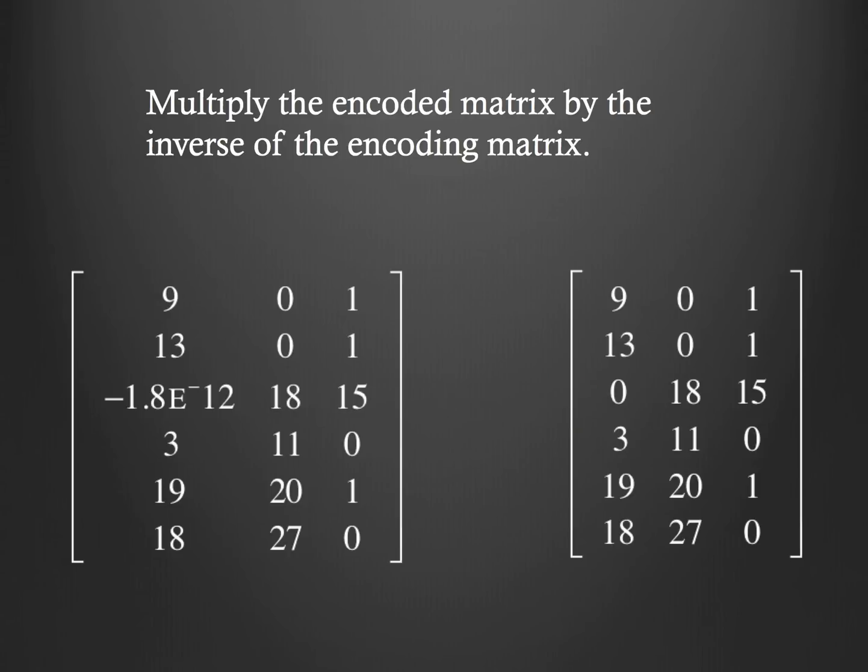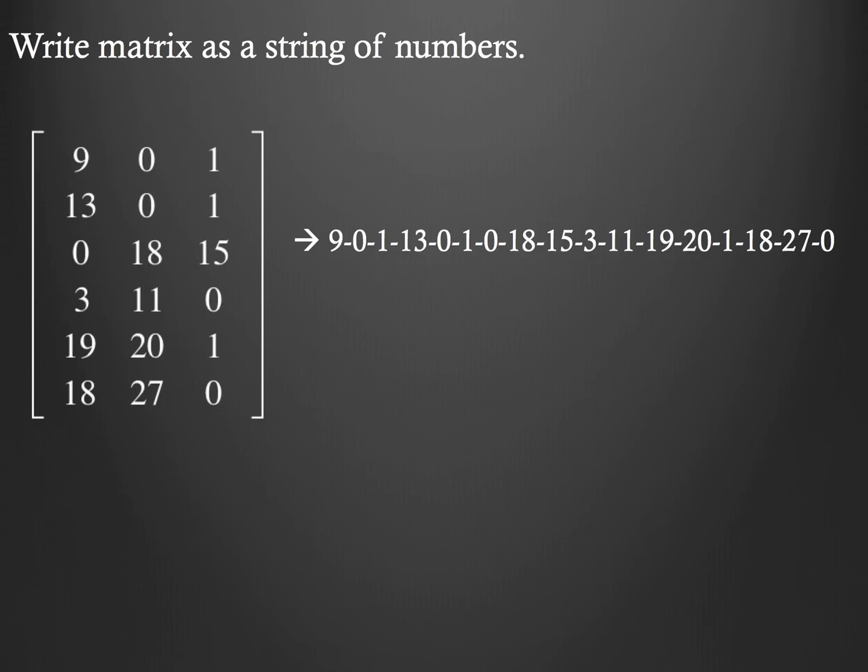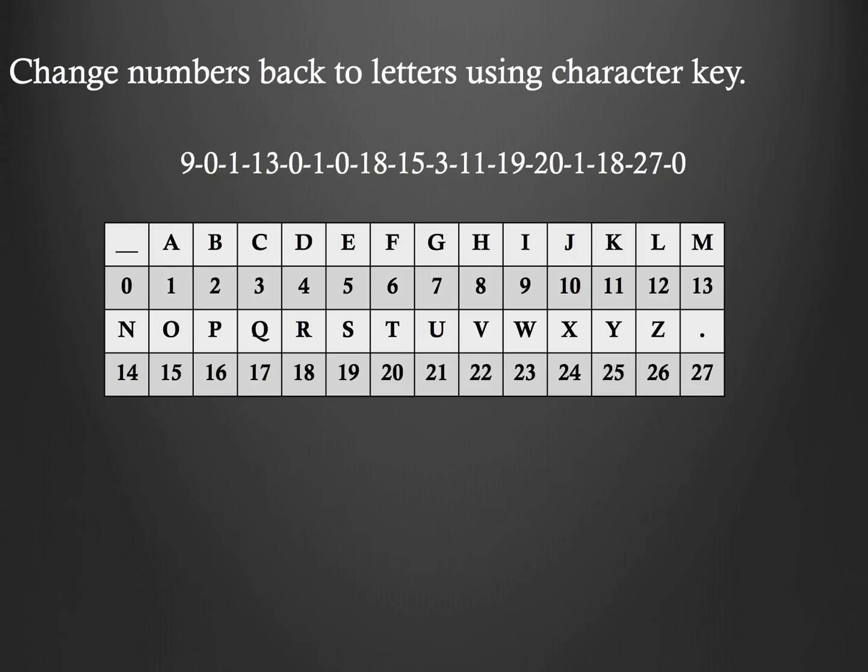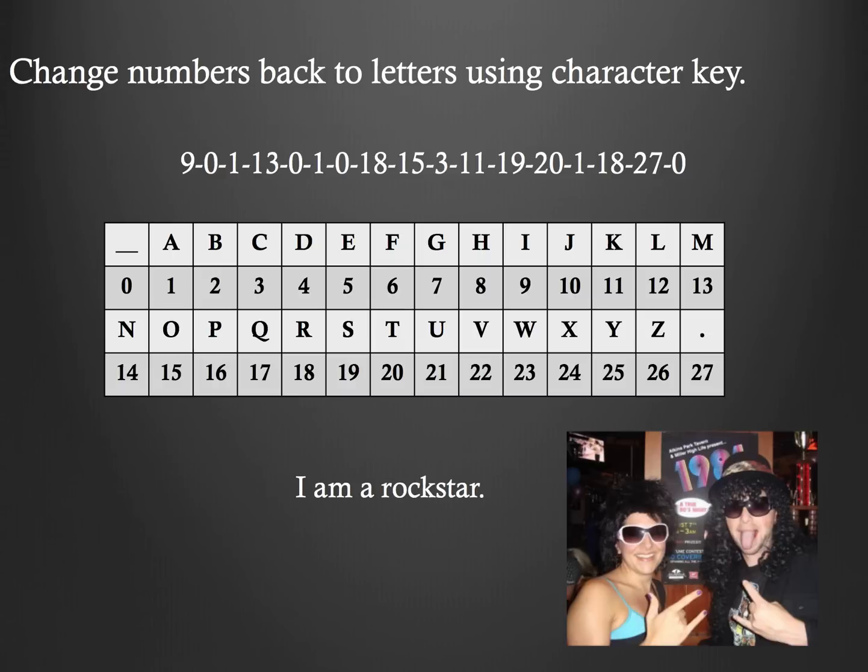So, now I've got this matrix that's 9, 0, 1, 13, 0, 1, etc. So, that's the matrix that I'm working with right now. And I'm going to write that as a string of numbers. So, I'm going to write out that string of numbers. Now, here's where that second thing that I needed comes in handy. The character key. So, I'm going to take that character key, and I'm going to change all of those numbers back to letters. So, my 9, that is the letter I. A 0, that's a space. The number 1, that is the letter A. And I would go through each one of those pieces to help decode this. And then when I'm done, I should end up with this message. I am a rock star.